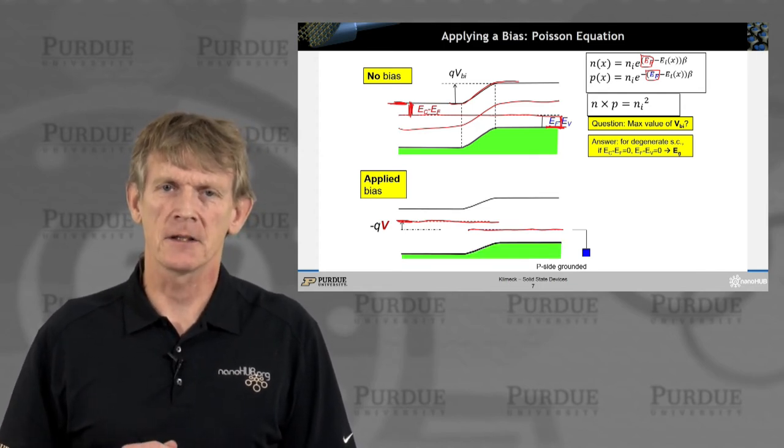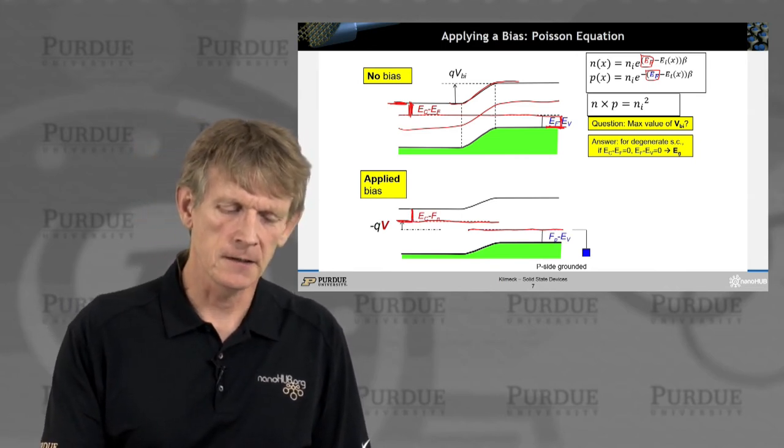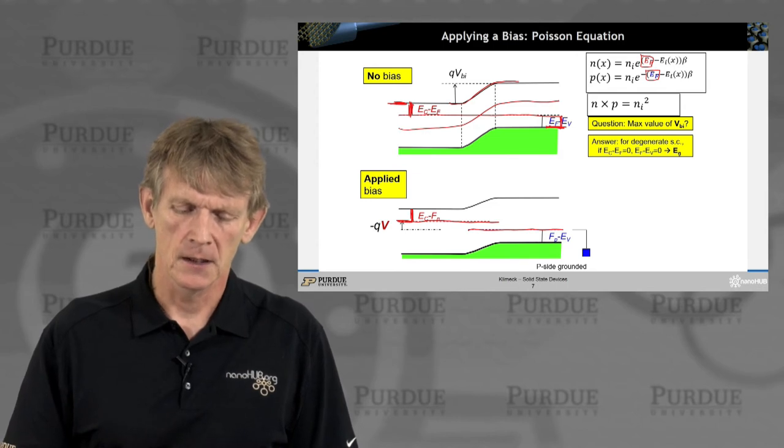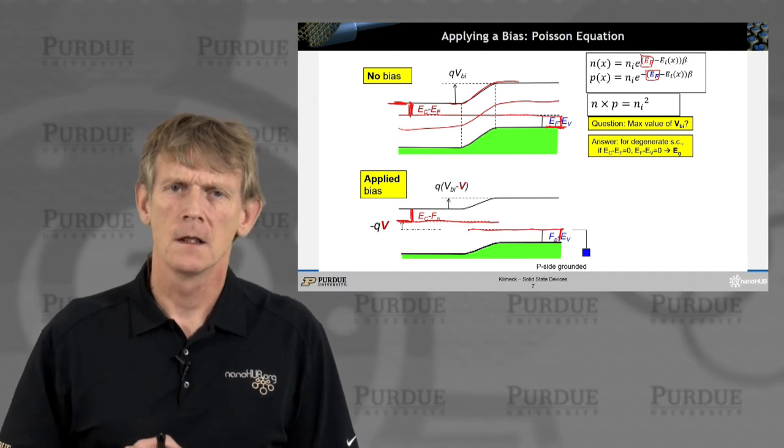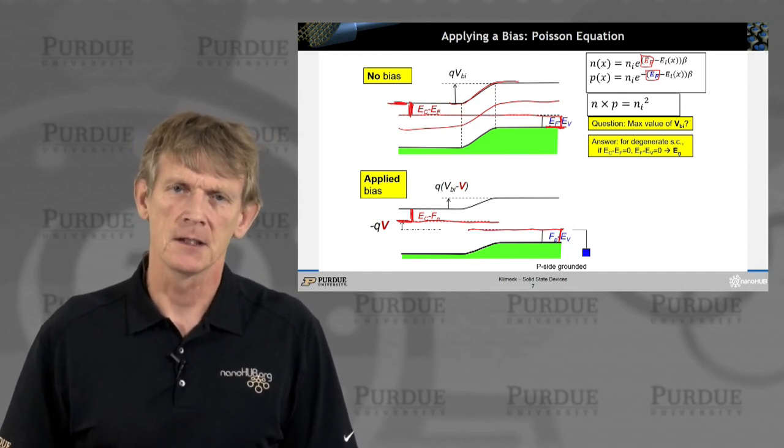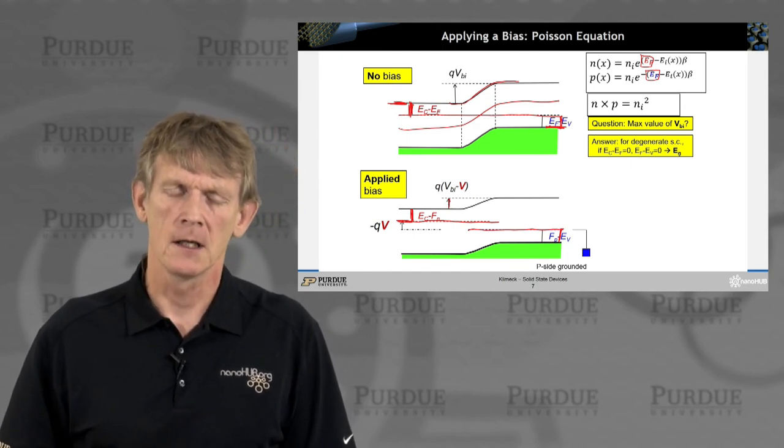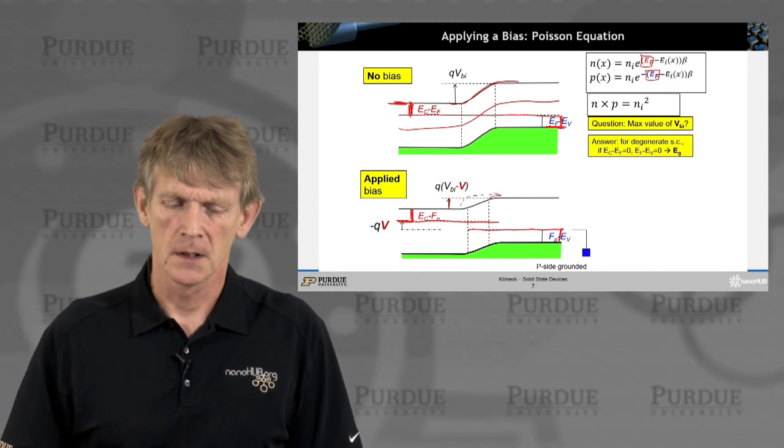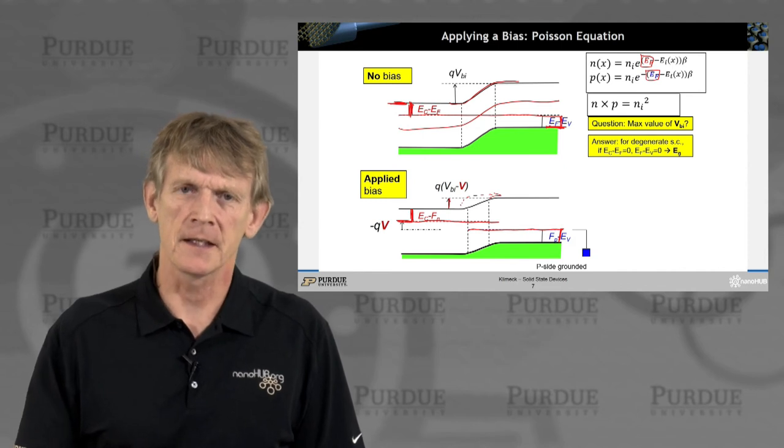And then we can draw a band edge diagram again. And what we'll see is we now measure the conduction band edge from the Fermi function for the electrons. And the valence band from the Fermi function for the holes. Now, the barrier that we've built in is now being reduced by the applied voltage. So, this distance here has become smaller by the applied voltage. So, that is how we can begin to see how more electrons can make it over to this side. There will be some effect on the depletion region here. And we'll discuss that in the next slide in more detail.